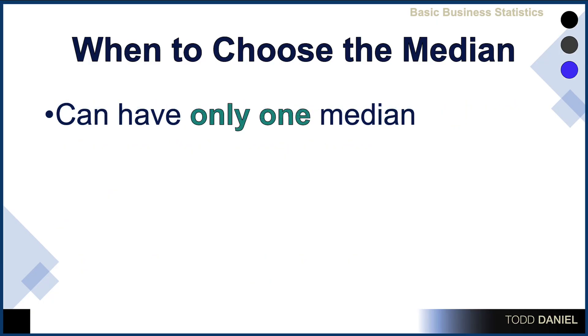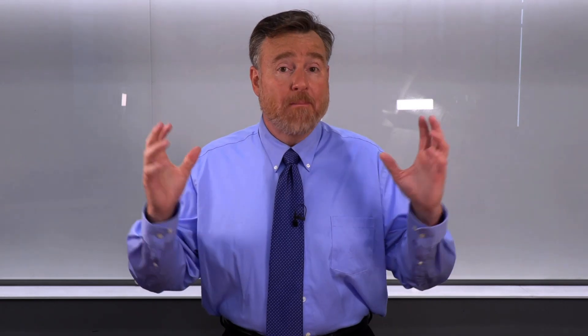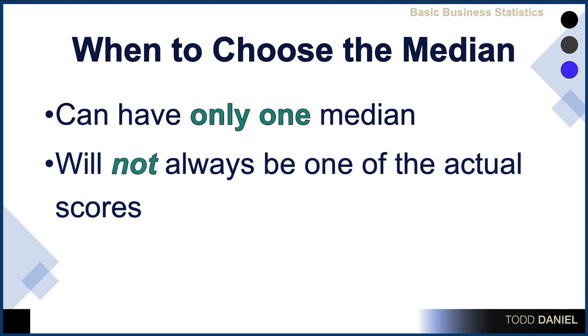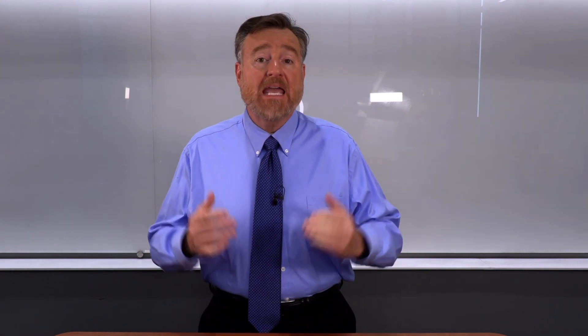Another advantage of choosing the median is that you can have only one median in your data set — unlike the mode, where we can have bimodal or multimodal distributions. Finally, it is possible that the median will not be one of the actual scores in our data set, as we learned when the median was 12.5, even though 12.5 did not appear in our data.